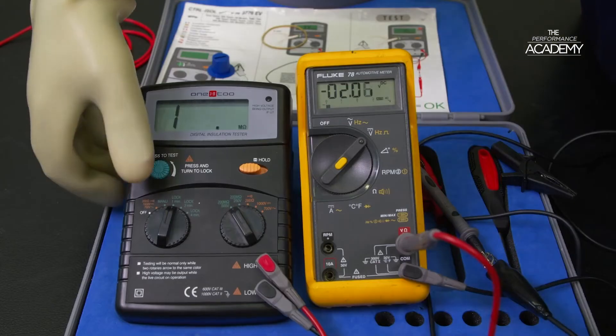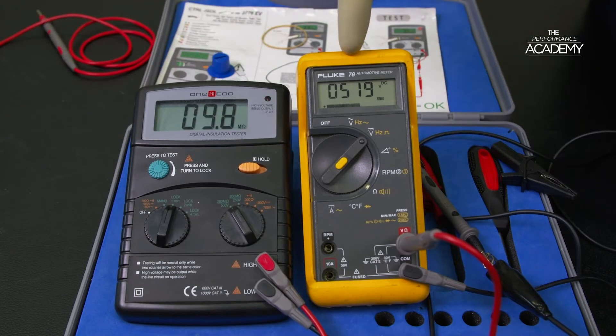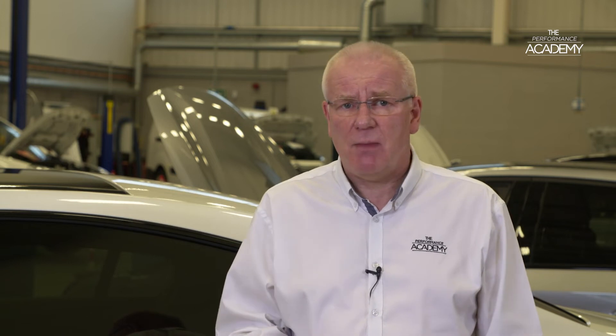Next we need to check the test voltage output of the insulation tester to ensure the output is 500 volts or more. For this we use an additional multimeter which also enables us to check the insulation tester is reading correctly. Standard multimeters have an internal resistance for voltage testing of approximately 10 to 11 mega ohms.